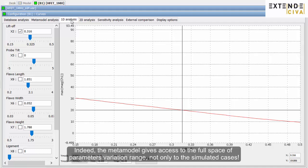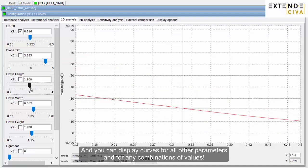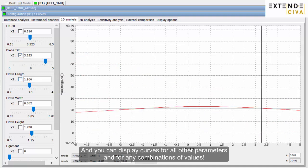Indeed, the metamodel gives access to the full space of parameters' variation range, not only to the simulated cases. And you can display curves for all other parameters, and for any combinations of values.